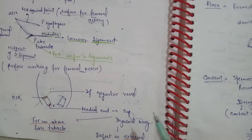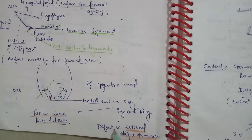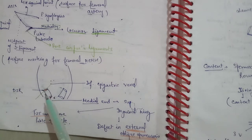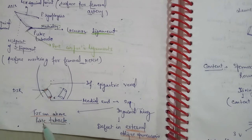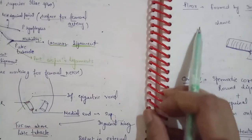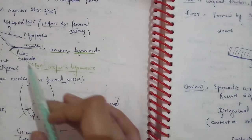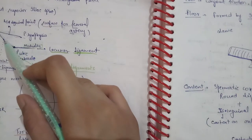Now let's see the superficial inguinal ring, which is the medial end of the inguinal canal. This is basically a defect in the external oblique aponeurosis. It is located 1.25 cm above the pubic tubercle.